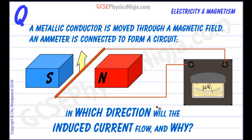And if there's a circuit present, then that will induce a current flow. So we're asking which direction will the induced current flow in this example and why will it flow in that direction?